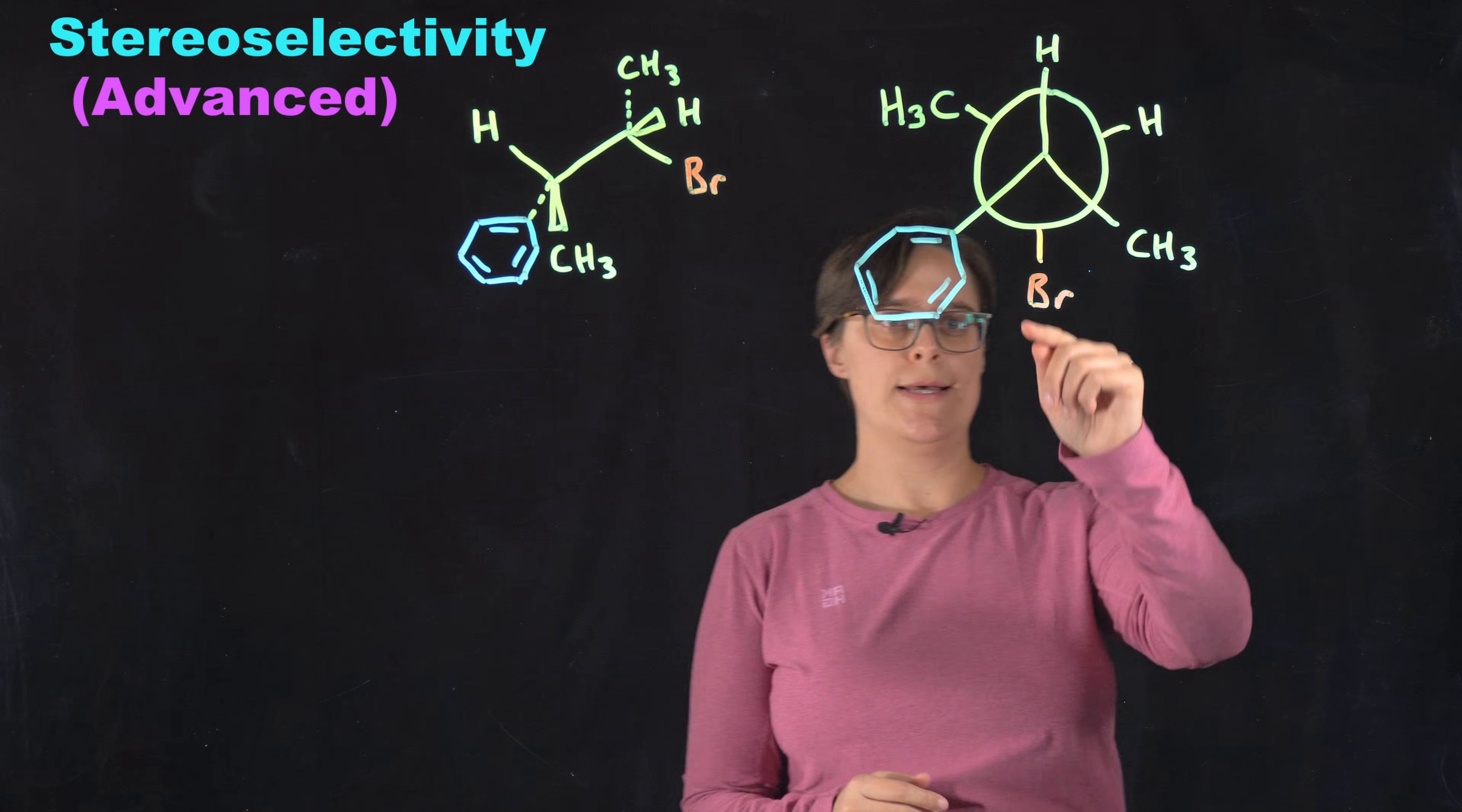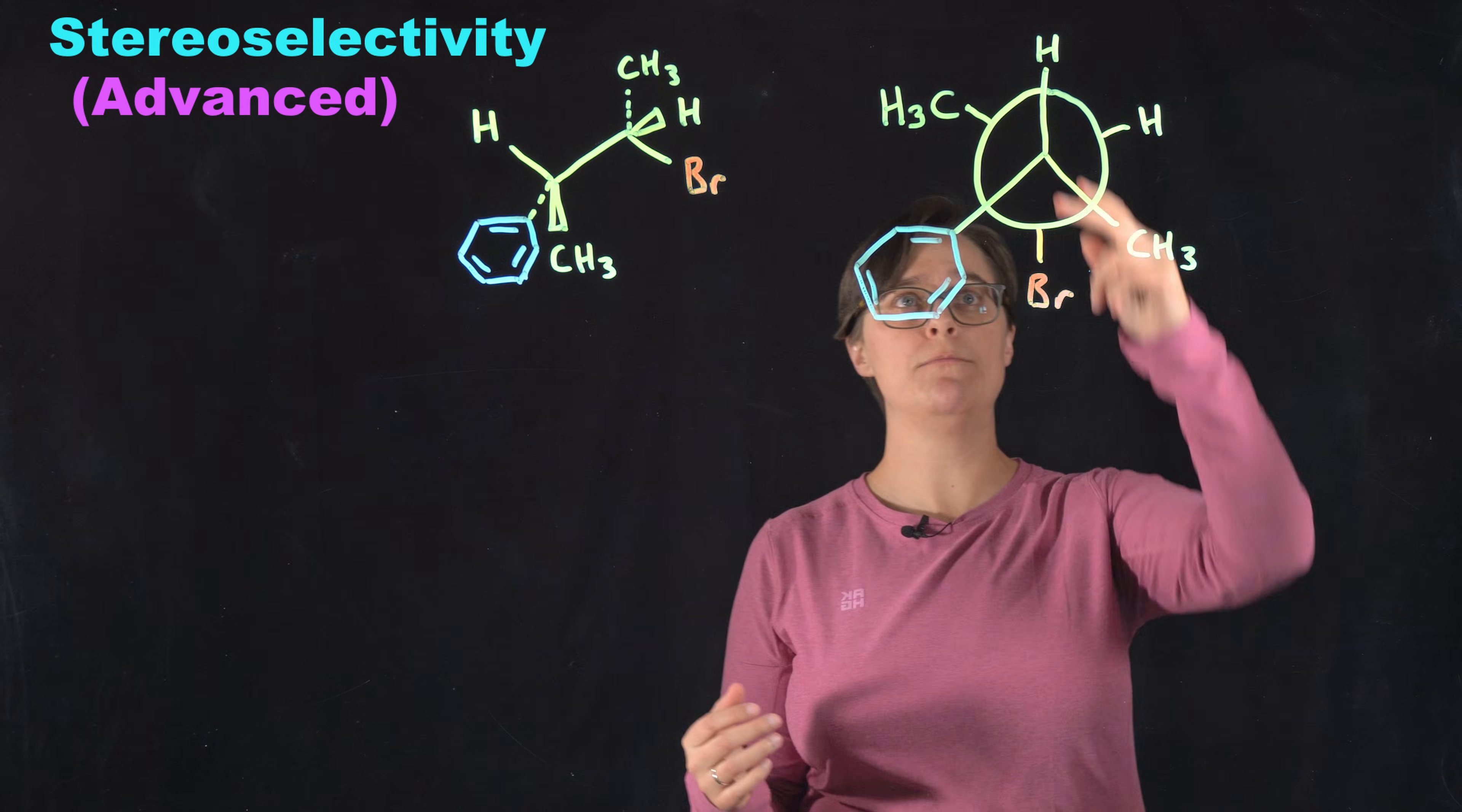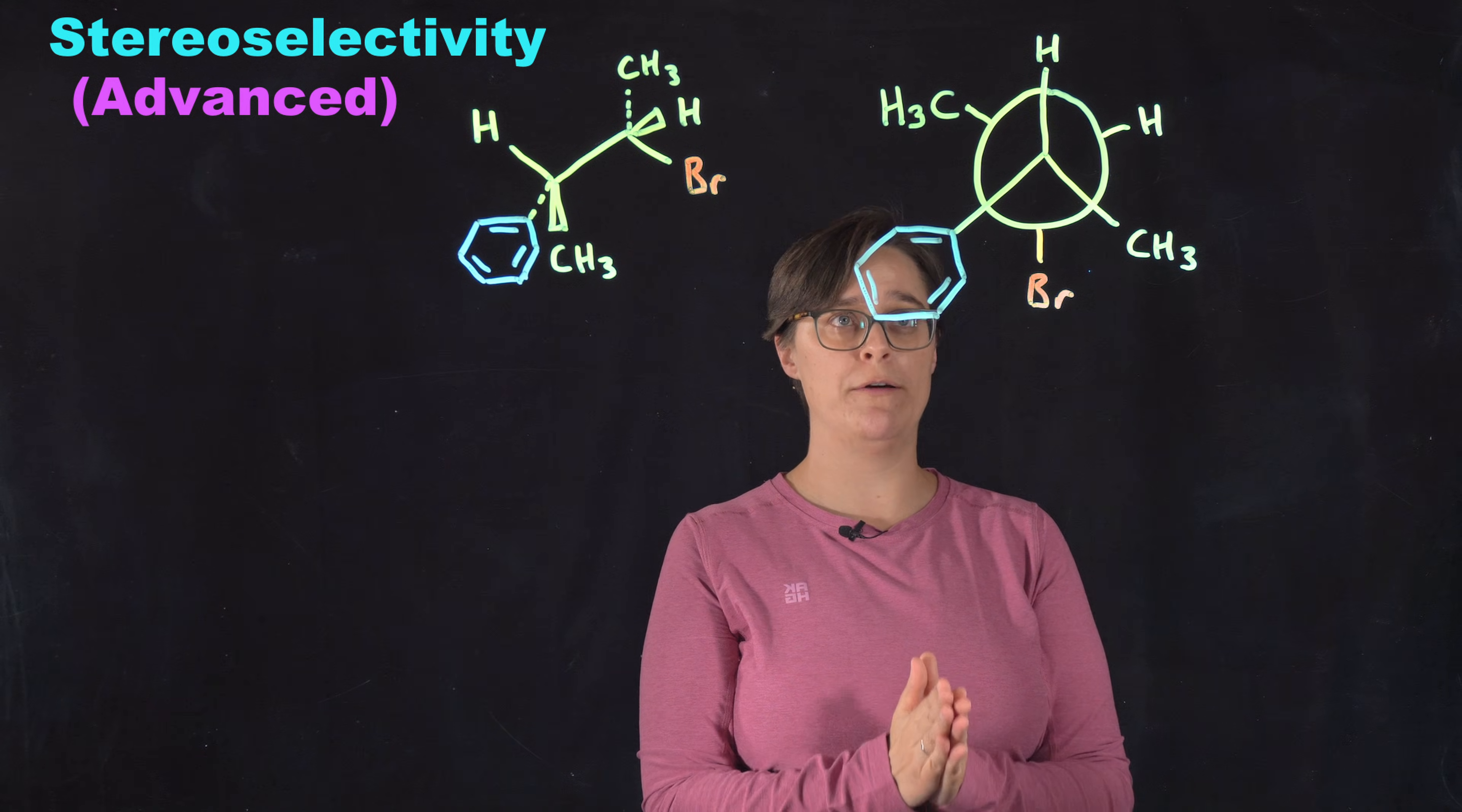So this leaving group and this hydrogen on our beta-carbon need to be 180 degrees apart. That's anti-conformation. And this is the only geometry in which this reaction is actually going to occur. So if we had more than one hydrogen on this beta-carbon, that means this bond could rotate into any orientation. There's more than one conformation that can react. But we only have one hydrogen that can react. It has to be in this particular conformation.